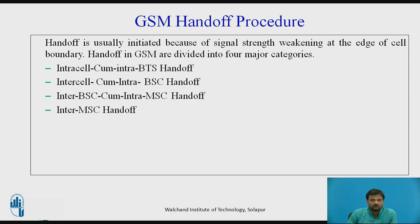The last category is inter-MSC handoff. The connection is changed between two cells that are in different MSCs. This situation occurs in the case of roaming. This handoff occurs where the handoff condition is notified through the PSTN, and the home MSC sends the necessary data to the new MSC through the PSTN again.